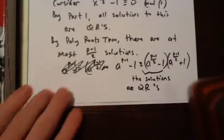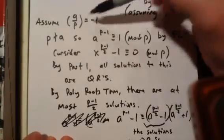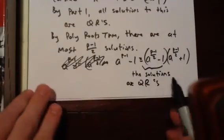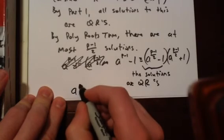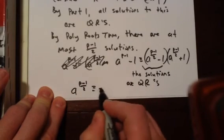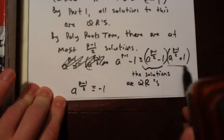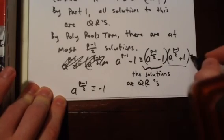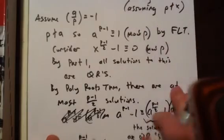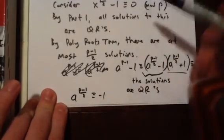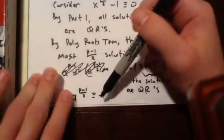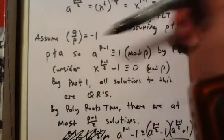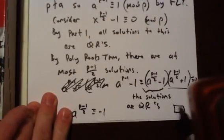And now, since we are assuming that A is a non-quadratic residue, then this is non-zero, and so we must have that A to the P minus 1 over 2 is congruent to negative 1, because this must be 0 to satisfy this equation. It is congruent to 0 by Fermat's Little Theorem. And so we have shown that A to the P minus 1 over 2 is negative 1 if the Legendre symbol is negative 1, and that completes the proof.